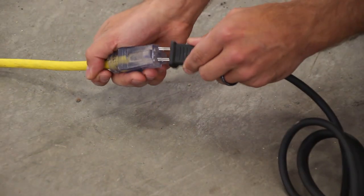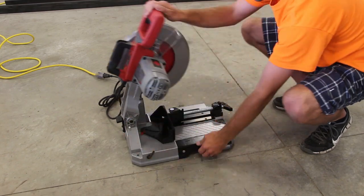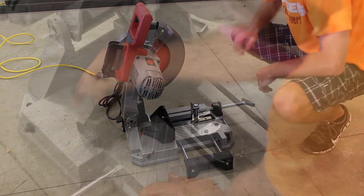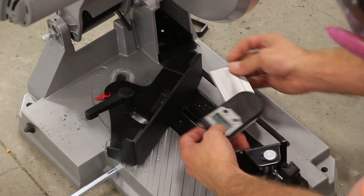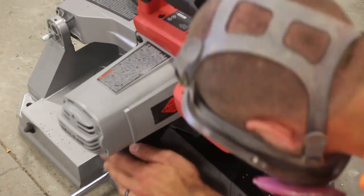I start by plugging in my metal cutting saw and getting it ready for use. I'm going to use mitered corners so I use my digital angle finder to set the adjustable fence to 45 degrees.